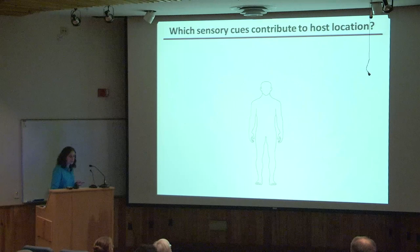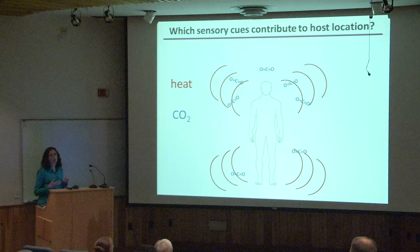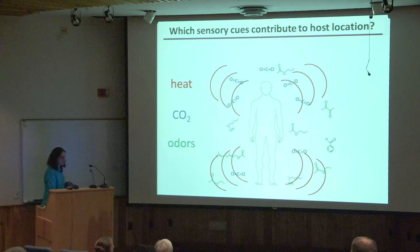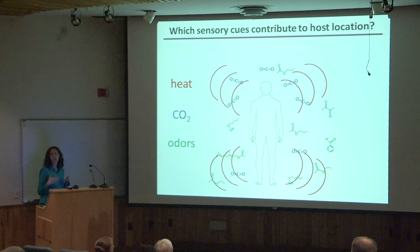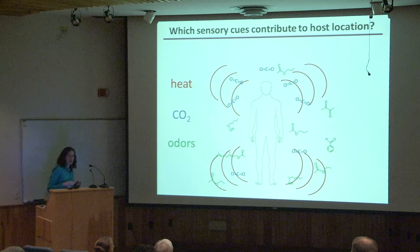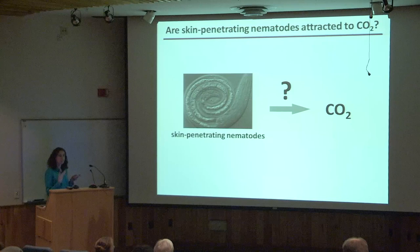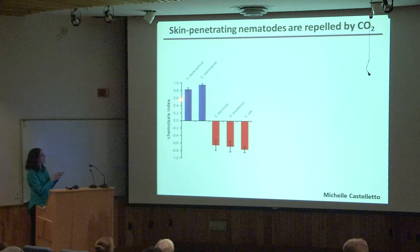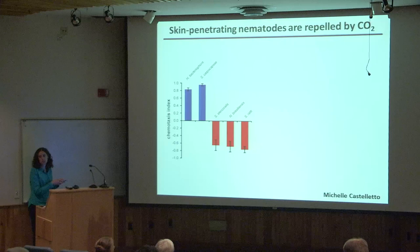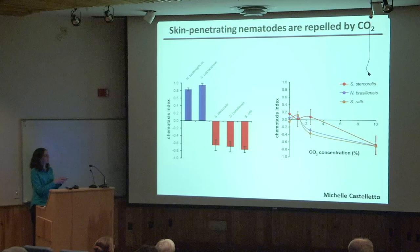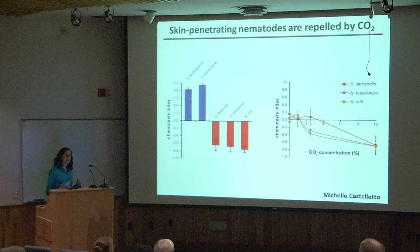The next question was which sensory cues contribute to host location — candidates include heat, carbon dioxide, and skin odors. We focused on CO2 and odors. Unlike insect parasites, which are strongly attracted to CO2, the mammalian skin-penetrating worms are actually repelled by CO2 at high concentrations, and CO2 is essentially neutral at lower concentrations. It appears these skin-penetrating worms are not relying on CO2 to find their hosts, so we then asked what odors they respond to.